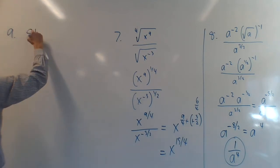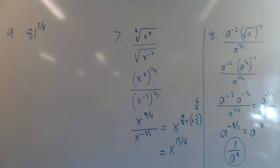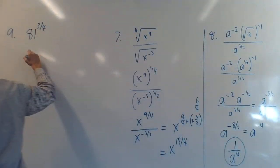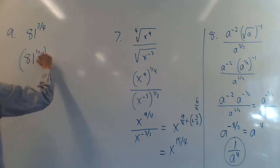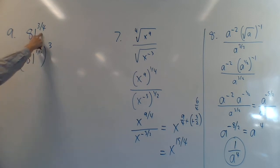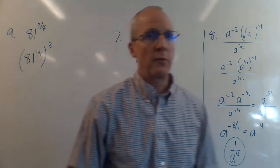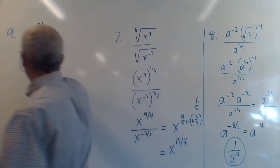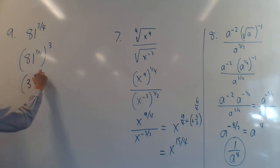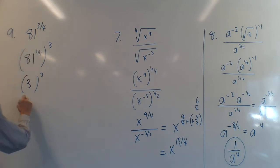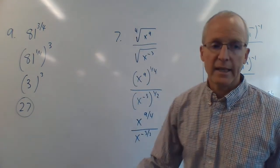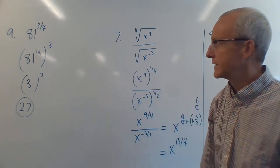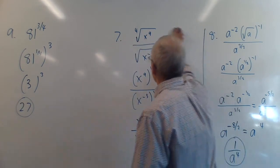Number nine: evaluate 81^(3/4) without a calculator. Rewrite as (81^(1/4))³ — the fourth root of 81 cubed. What number raised to the fourth power is 81? Three: 3⁴ = 81. So 81^(1/4) = 3, and 3³ = 27. Answer: 27. On a quiz I want to see the steps, not just a calculator answer.